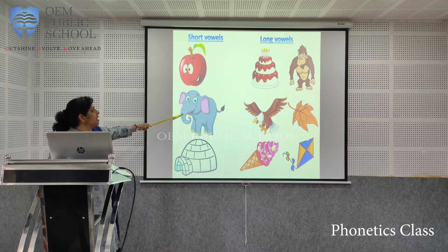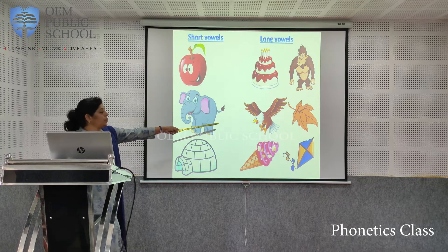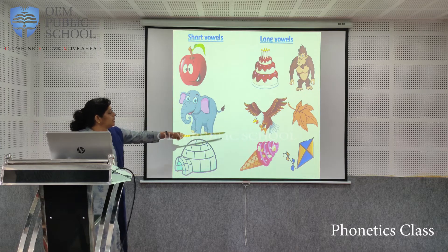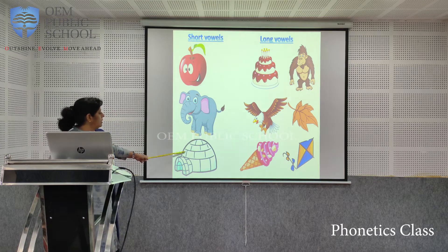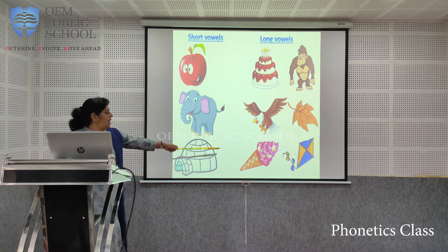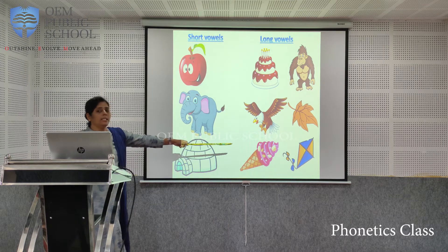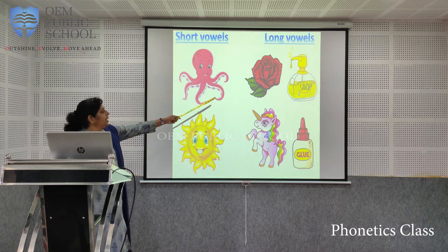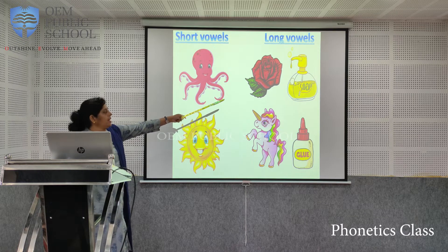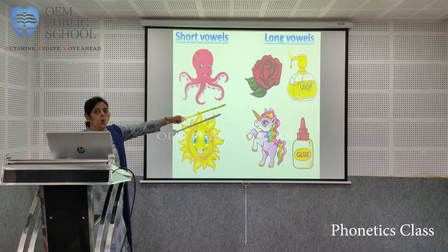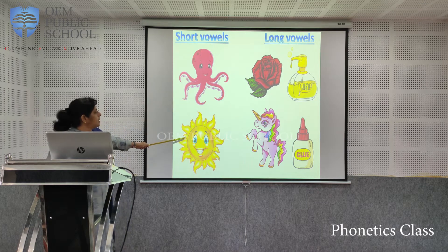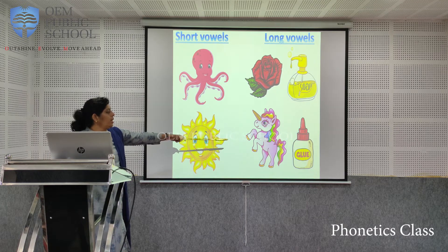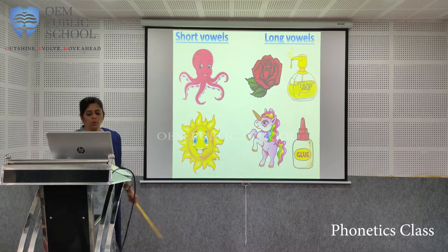Elephant uses the short E, but eagle and leaf show the long vowel. Then igloo, ice cream, and kite all show long vowel sounds. A as in octopus — look at that long sound. Rose and soap show the long O. O and sun — the U sound in sun, and when it comes to the long vowel, you say unicorn and glue — the U is more prominent.